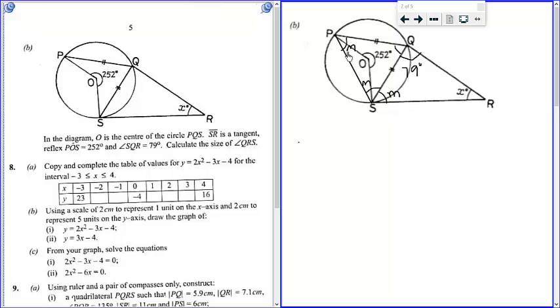Angle POS. We know that angle POS is equal to 360 minus 252 degrees, because there are angles at a point they will add up to 360. So this will give us 108 degrees.